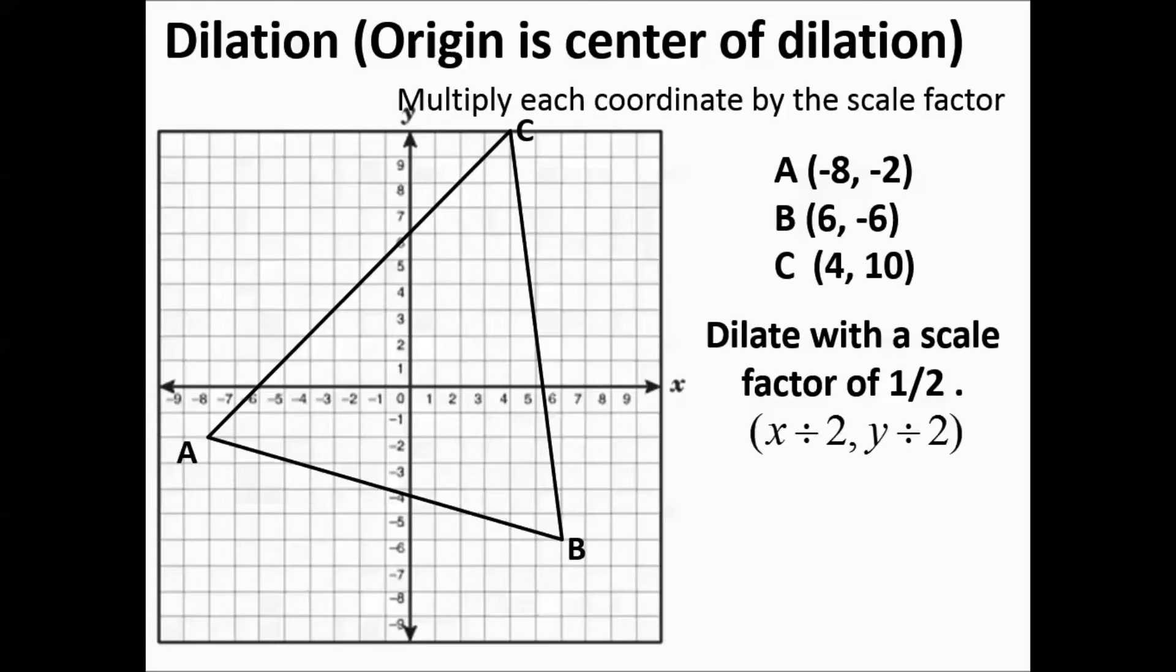Now if it was like 3 fourths, you couldn't think like this. But with 1 half dilations, you can just divide by 2. So when you work them out, you have point A's image. You're going to get that by doing negative 8 divided by 2 and negative 2 divided by 2.